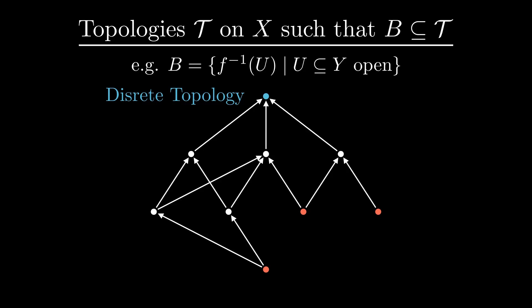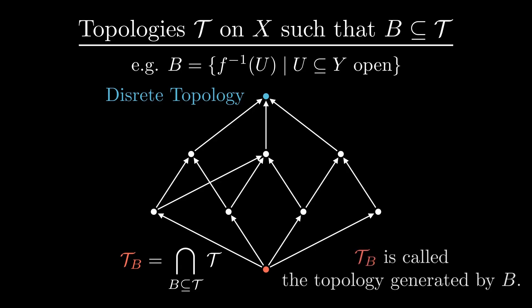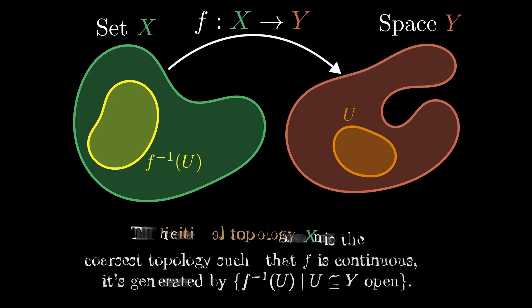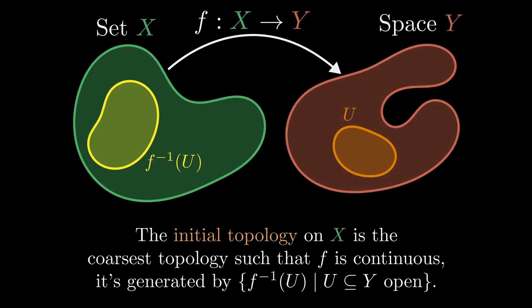In principle for a partial ordering there can be multiple minimal elements. In our case, however, we have a unique minimal element. It's given by the intersection of all topologies which include the set b. You can easily check by the axioms that this is again a topology. We say that this topology is generated by b. So we have proven that there is a unique coarser topology on x such that f is continuous. This is called the initial topology.